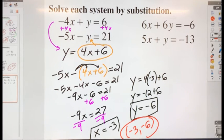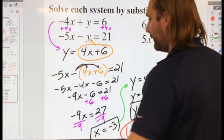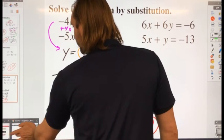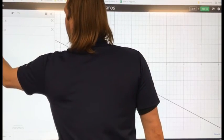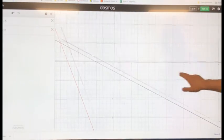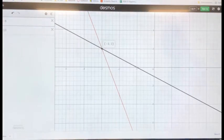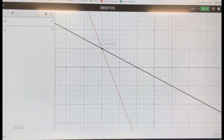Now your turn. Solve 6x plus 6y equals negative 6 and 5x plus y equals negative 13. Props to you if you saw this algebraically. Perfectly fine if you want to solve this graphically. So let me go ahead and plug in these two lines in my graph. And I find that my solution is what? Negative 3, 2.